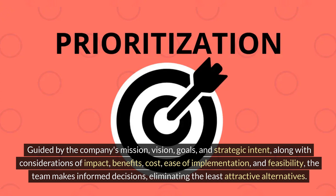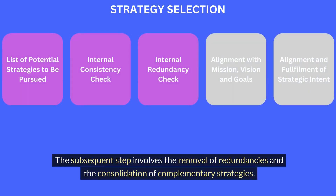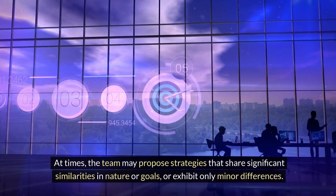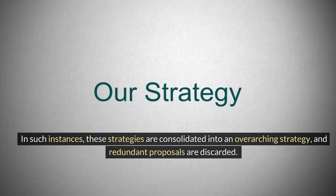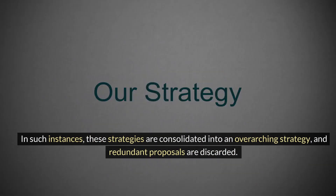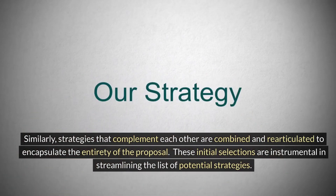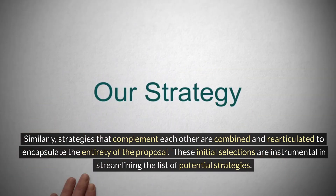The team makes informed decisions, eliminating the least attractive alternatives. The subsequent step involves the removal of redundancies and the consolidation of complementary strategies. At times, the team may propose strategies that share significant similarities in nature or goals, or exhibit only minor differences. In such instances, these strategies are consolidated into an overarching strategy and redundant proposals are discarded. Similarly, strategies that complement each other are combined and re-articulated to encapsulate the entirety of the proposal. These initial selections are instrumental in streamlining the list of potential strategies.